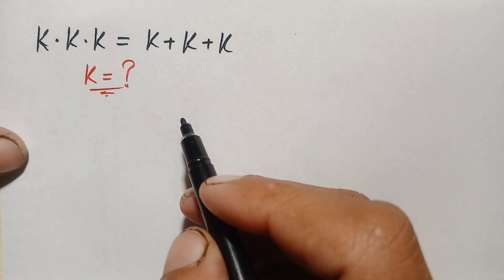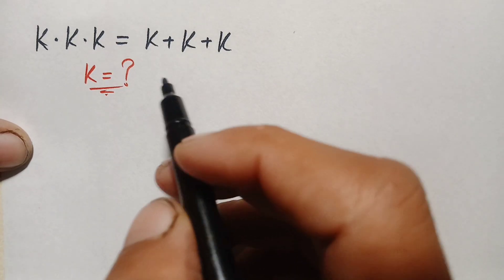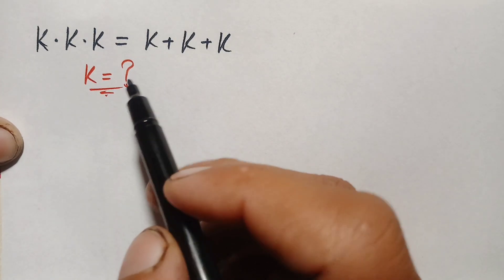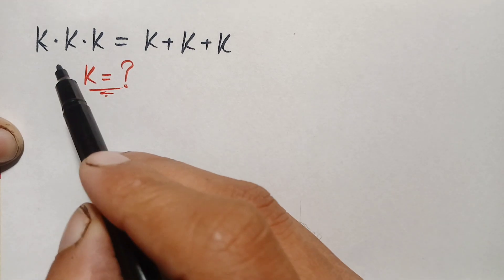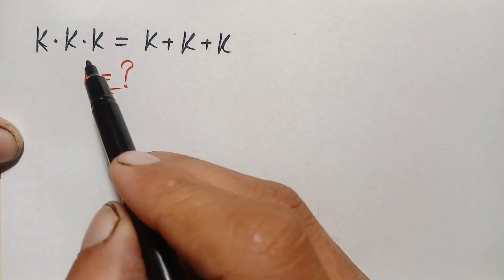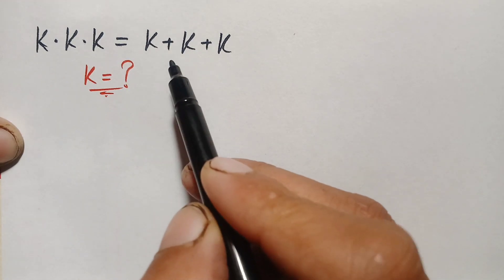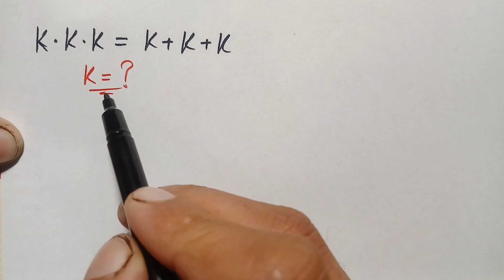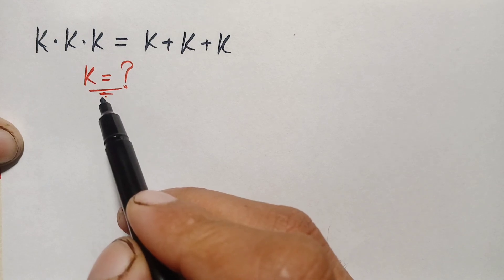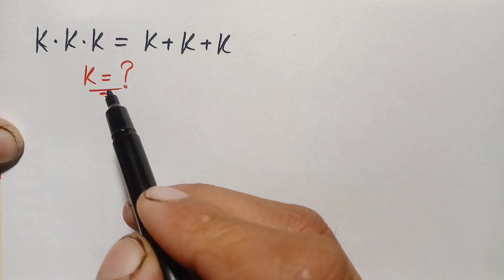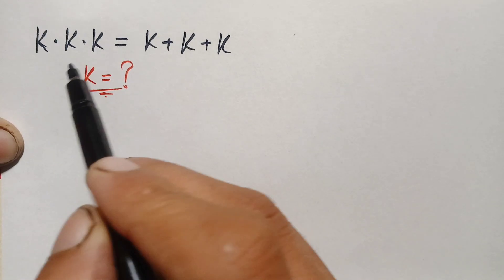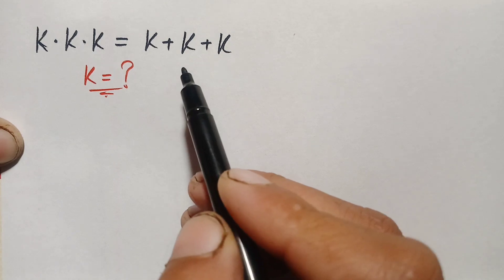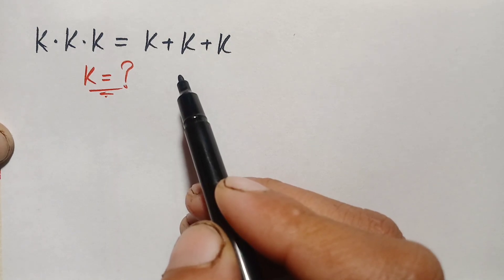Hello everyone, welcome. We will solve this algebra math problem: k times k times k is equal to k plus k plus k. We will find the value of k, where k is multiplied three times on the left and added three times on the right.